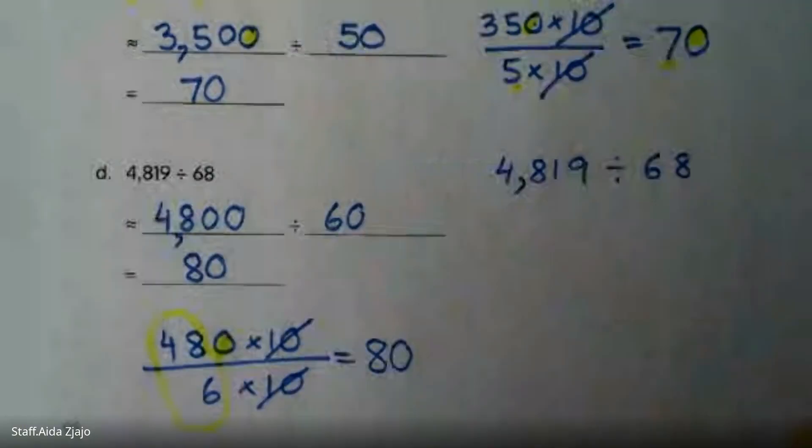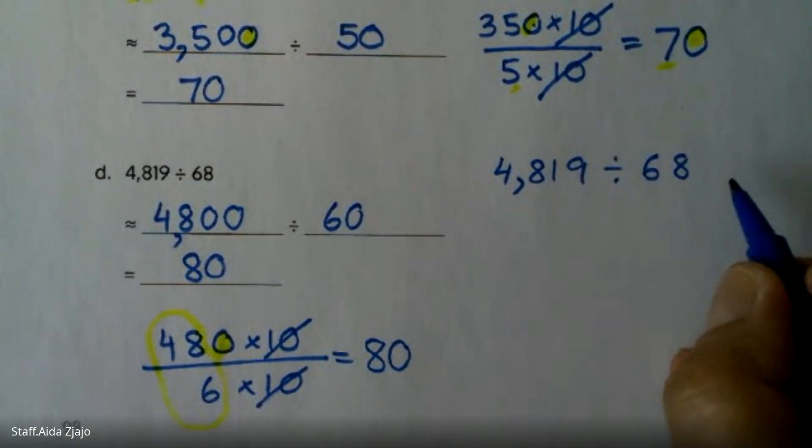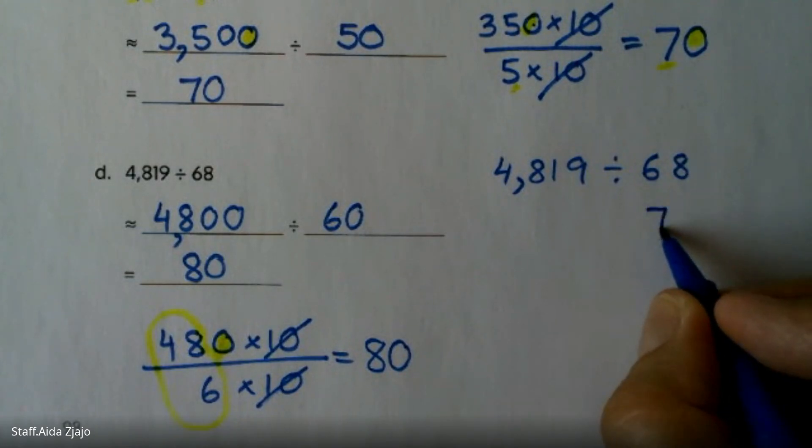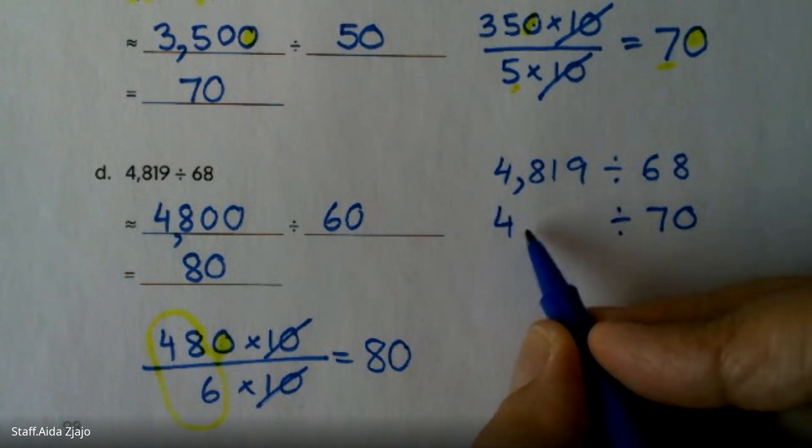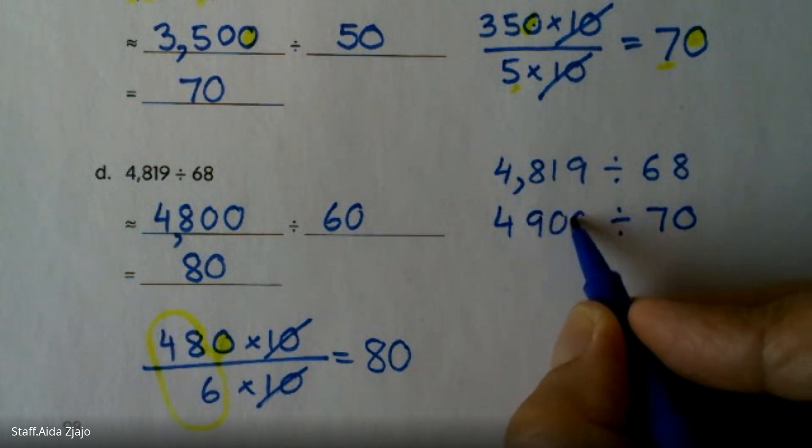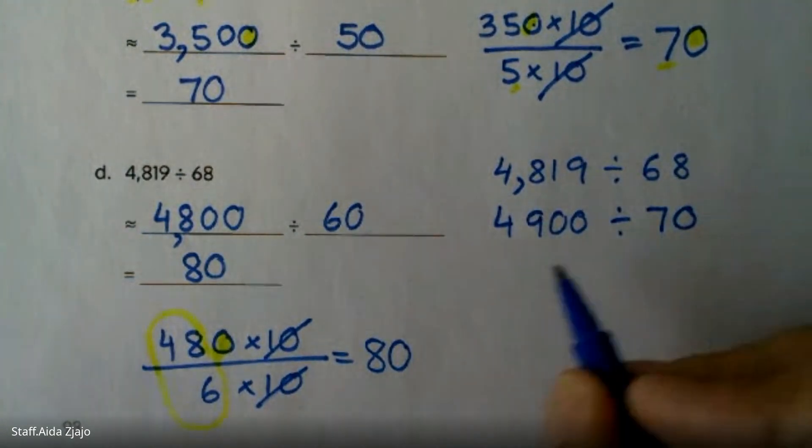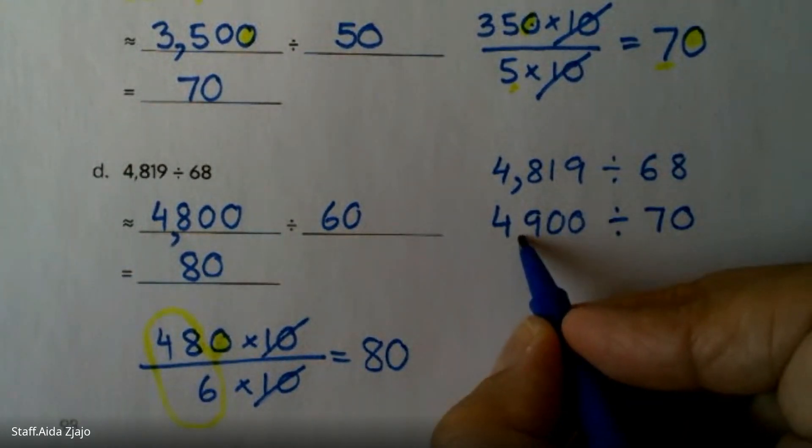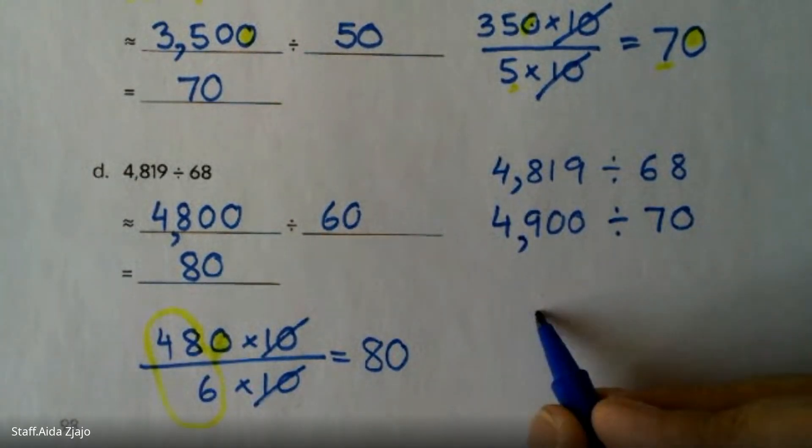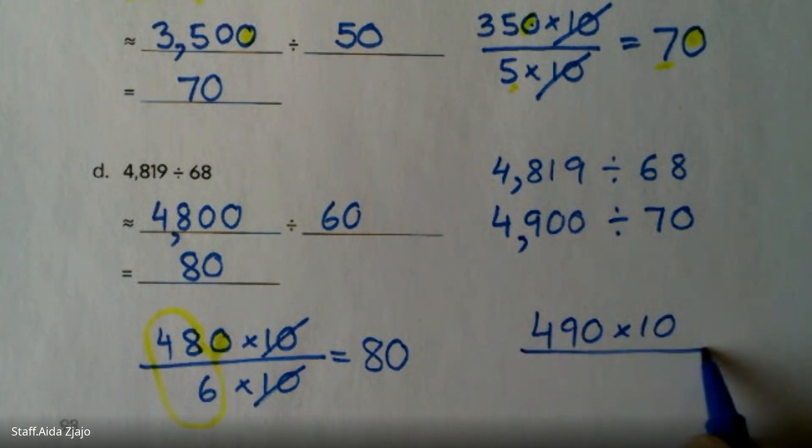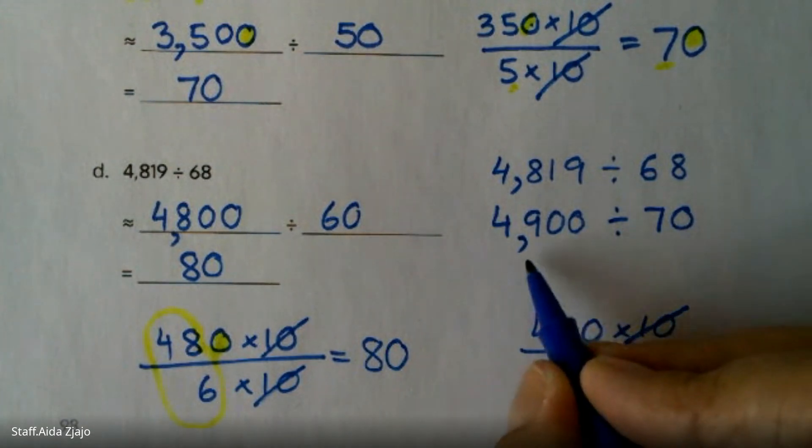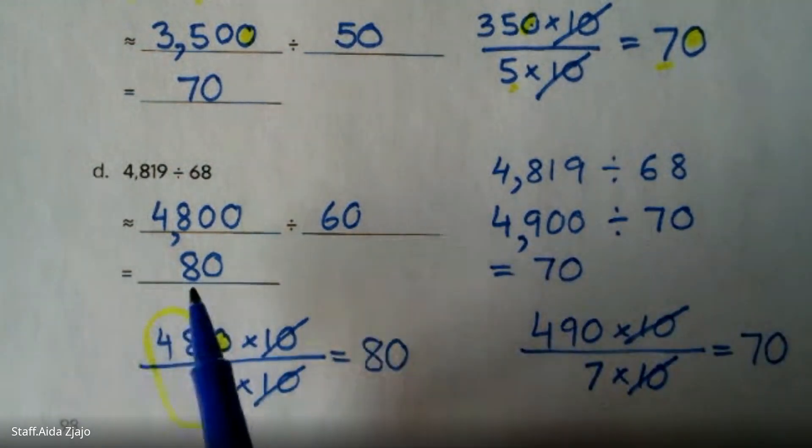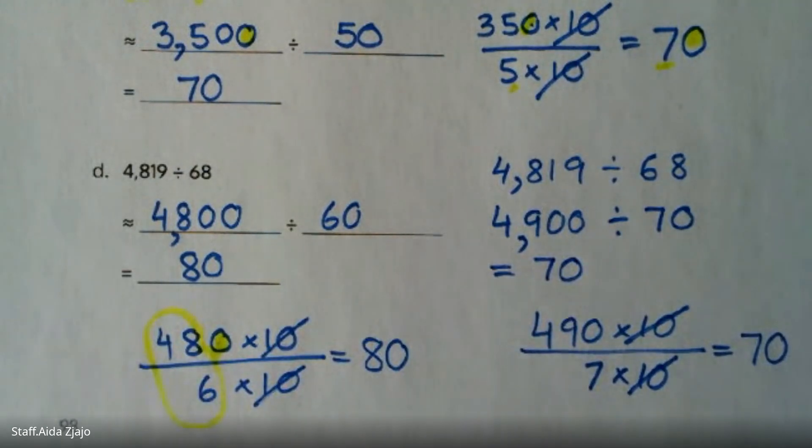And then if I choose to do a different approach with the 70, if 68 is really close to 70, and then I have to choose this one that is also divisible, so I'm going to use 4,900 because 7 times 7 is 49. Let's see how that looks: 490 times 10 divided by 7 times 10. So 10 and 10, and 49 divided by 7 is 7, and that 0. So this estimate was 70 and this estimate was 80, so the answer probably is in between those two numbers.